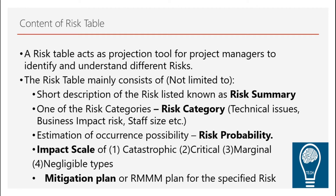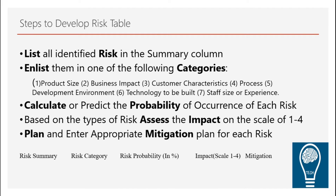How do you develop the risk table? First, list all identified risks — summarize them and list them into different categories. There are seven categories: product size, which is the size of the product and amount of work to be done; business impact, when the project directly impacts the whole business — a very high level of risk; and customer characteristics, where requirements are changing and customers may not understand how systems are developed.